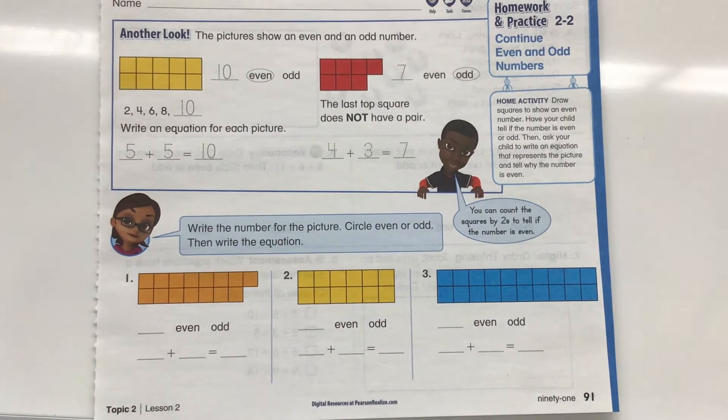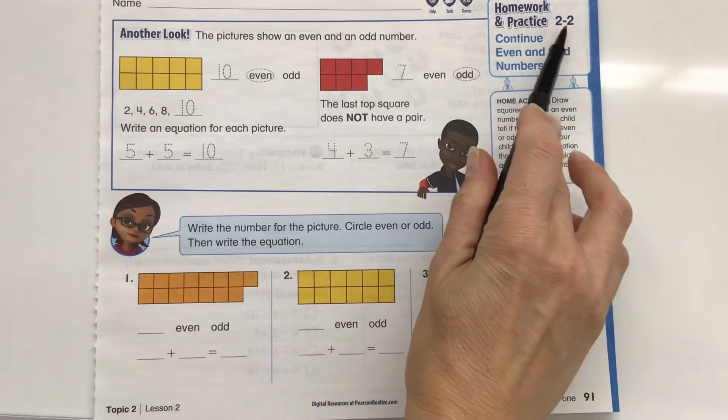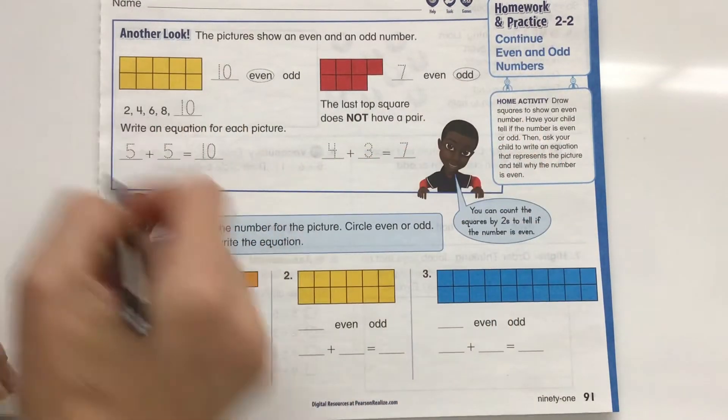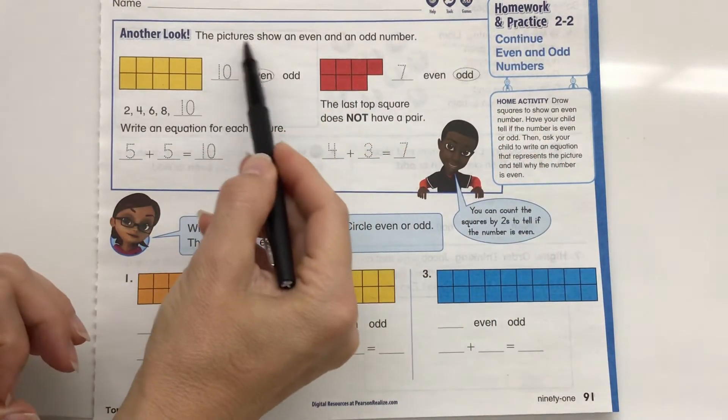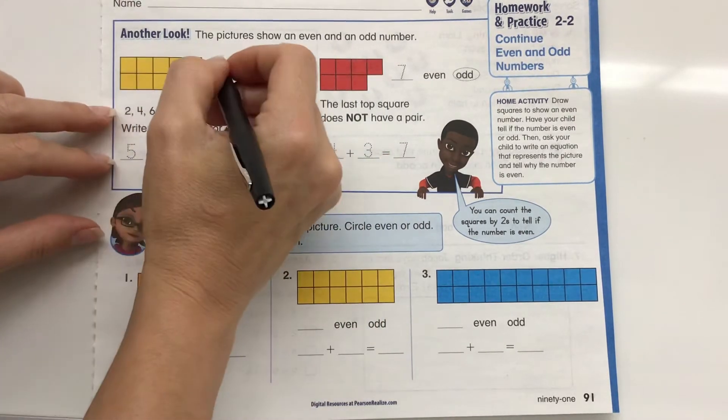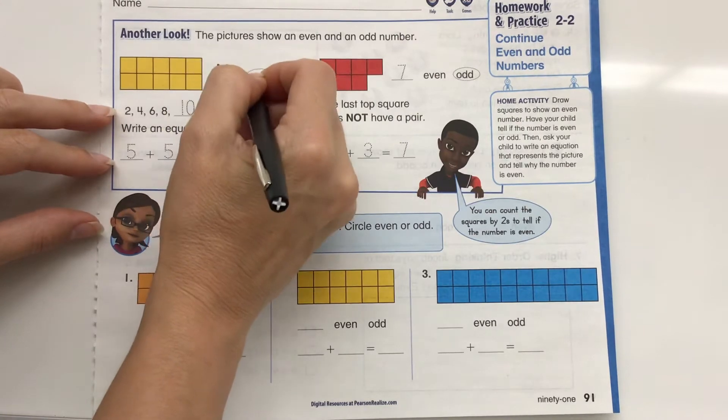All right. This is second grade homework and practice for 2-2. We're just continuing working with even and odd numbers. So let's take another look here. The pictures show an even and an odd number. So we have 10. We know that 10 is an even number.